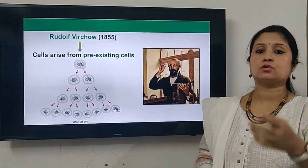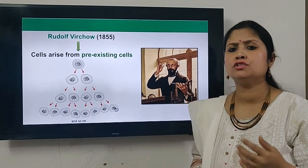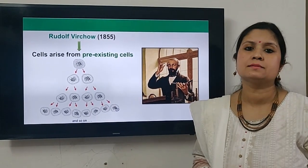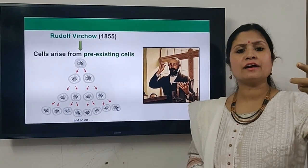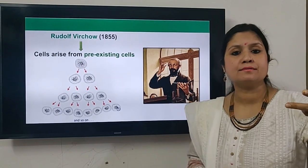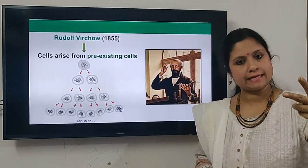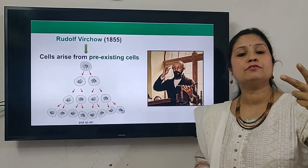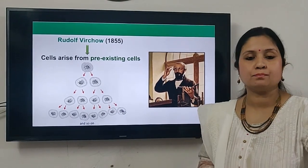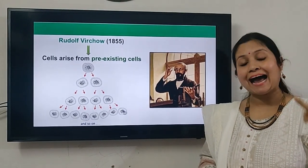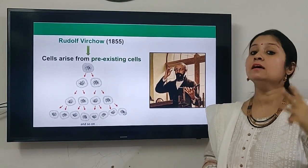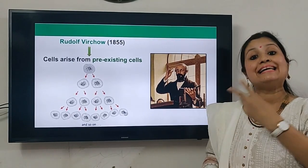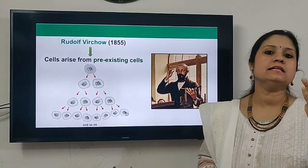The three points of cell theory are: one, all living organisms are made up of cells; two, cell is the structural and functional unit of life; and three, all cells arise from pre-existing cells.